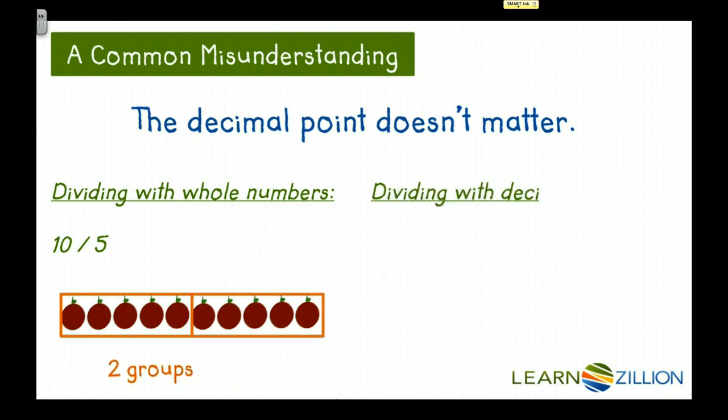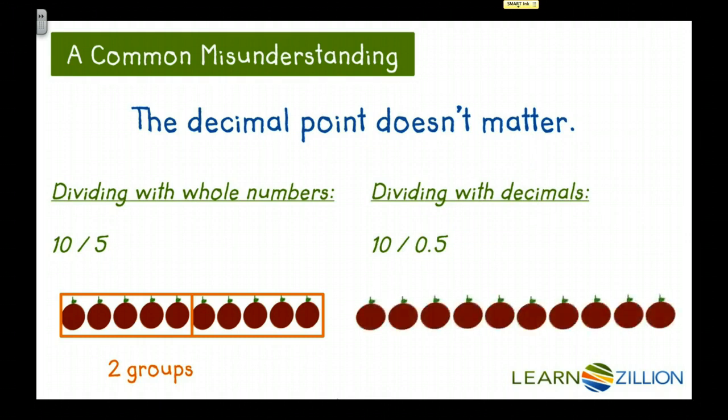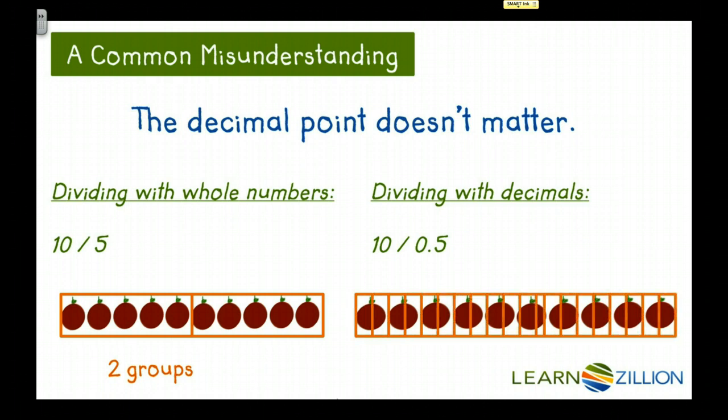But when we divide with decimals, something different happens. Here we have 10 divided by 0.5. So let's start with the same 10 apples, but now we're dividing them into groups of half an apple. So if we did that, in the end, we would have 20 groups.